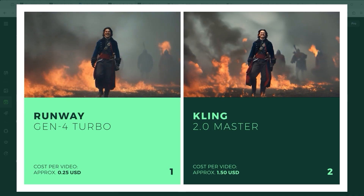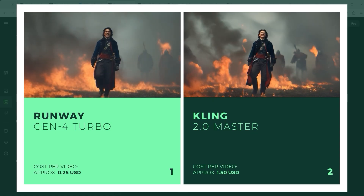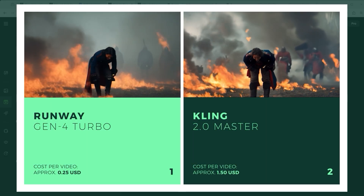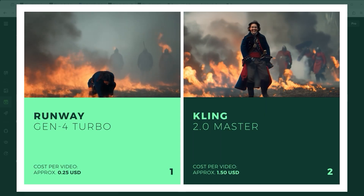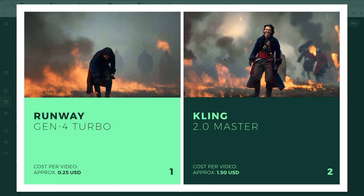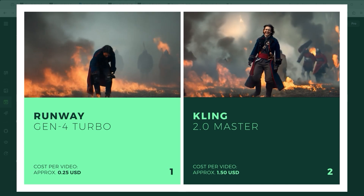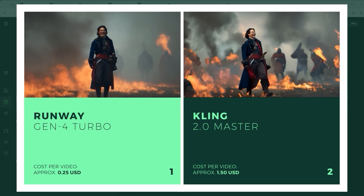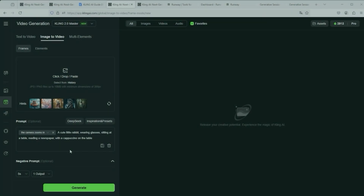The last example takes us to the French Empire. An officer stands in the middle of a battlefield with smoke and fire everywhere, but that doesn't seem to bother either gentleman — they enjoy their lives and bow to the camera. There's no real winner here. In Kling's realisation it is a little unfortunate that the people at the back right morph a little too much. Runway is a little more static.